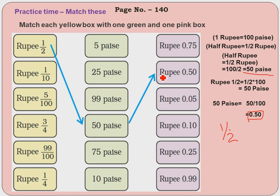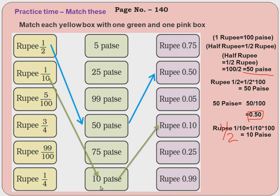Next, 1/10 of a rupee into paisa: 1/10 × 100 = 10 paisa. Remember — rupee to paisa means multiply by 100, paisa to rupee means divide by 100. So 1/10 of 100 is 10 paisa. Now converting 10 paisa to rupees: divide by 100, that equals 0.10 rupees.